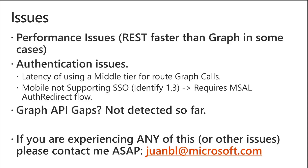In terms of API capabilities, I haven't heard so far of any REST API that doesn't have an equivalent in the Graph. So functionally, I think we should be okay — but we could have performance issues, and that also impacts the experience of the add-in. On authentication: the pattern we are suggesting is to have a middle tier to route the Graph calls, which is also causing some performance issues. This is required if you're authenticating with SSO, as you will see later. The team is working on improving this significantly, but it's expected to be available later in the year.